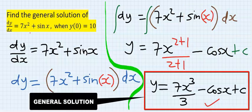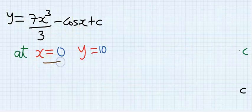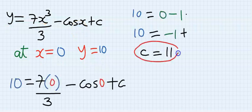Next, we are going to consider the initial condition at x equals 0, y equals 10. Hence, I will put 0 here, 0 here, and I will put 10 here. c is equal to 11.